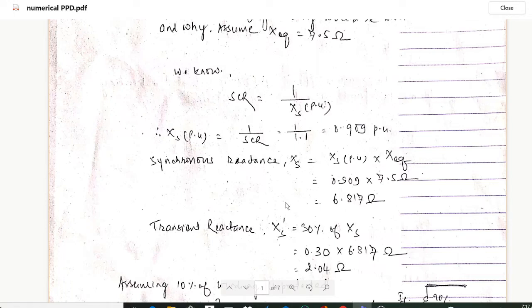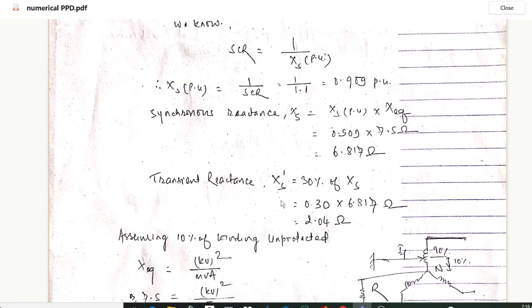Similarly, the transient reactance: in order to calculate the transient reactance we have to consider 30 percent of this synchronous reactance. So 30 percent of synchronous reactance will be 0.30 into 6.817, and on calculation we will get 2.04 ohms.